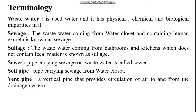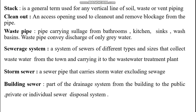Soil pipe is a pipe carrying sewage from the water closet. Vent pipe is a vertical pipe that provides circulation of air to and from the drainage system. Vent pipes are extensions of soil and waste pipes through the roof, paralleling the drainage system for the admission of air and discharge of gases. Stack is a general term for any vertical line of soil, waste, or vent piping. Clean out is an access opening used to clean out and remove blockage from the pipe.